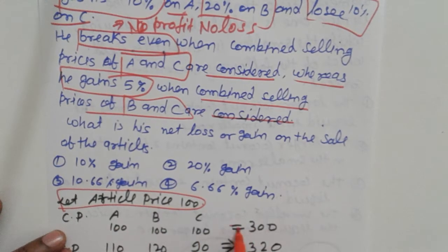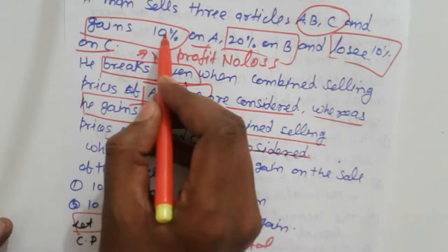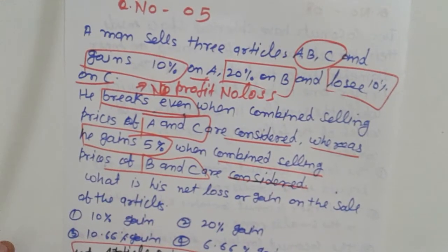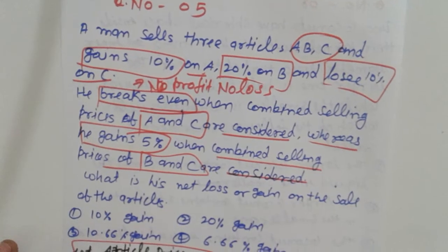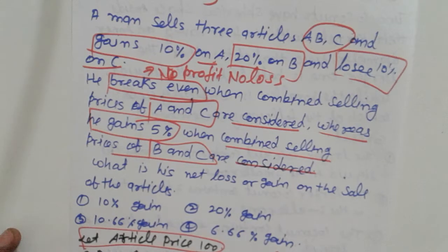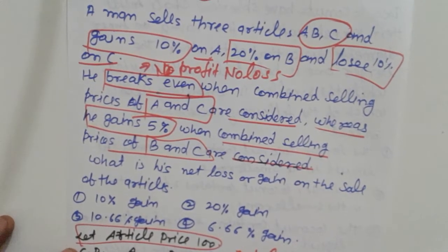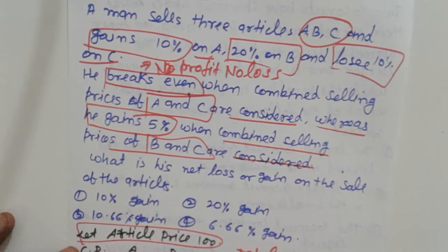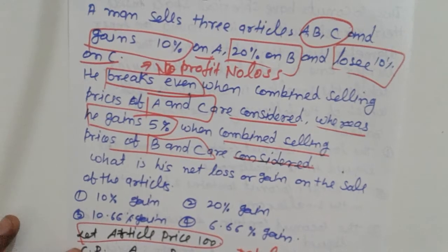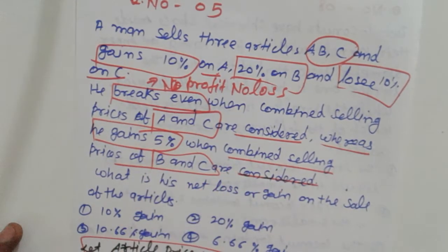Suppose the cost price of each article is 100 rupees. Total CP is 300. Selling price: 110 for A (10% gain), 120 for B (20% gain), and 90 for C (10% loss). Total SP is 320. A and C together: CP = 200, SP = 200 — no profit no loss verified. B and C together gives 5 percent gain, which verifies the given statements.